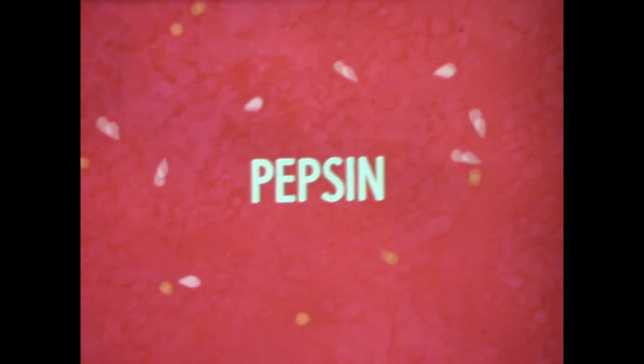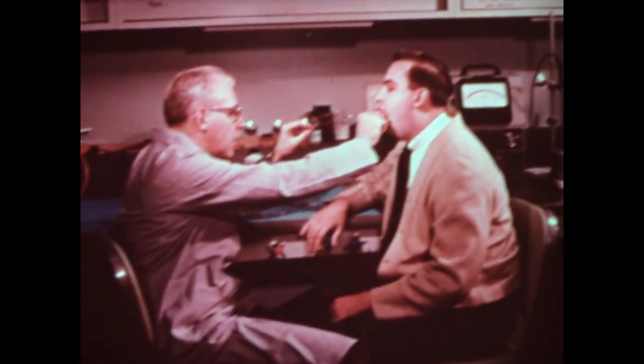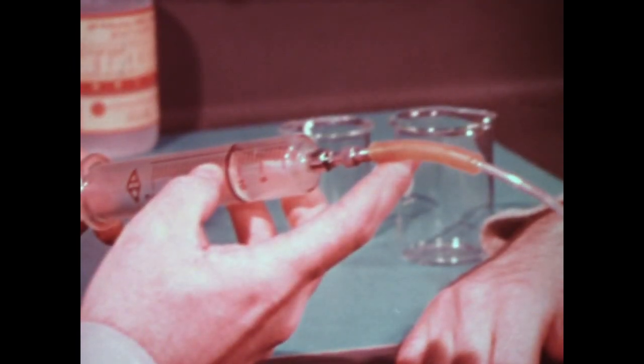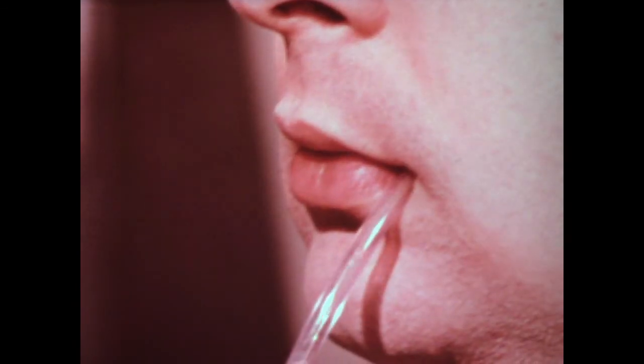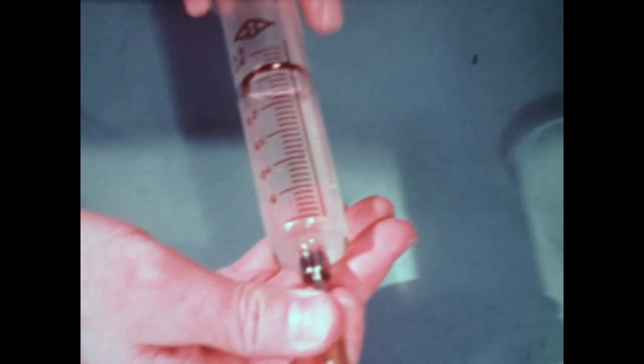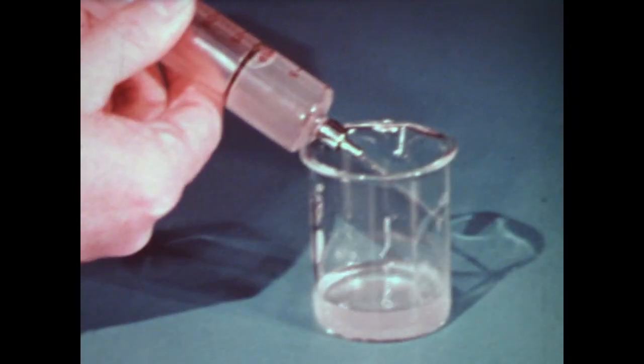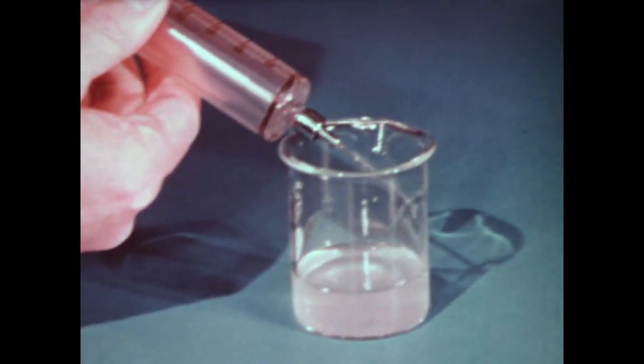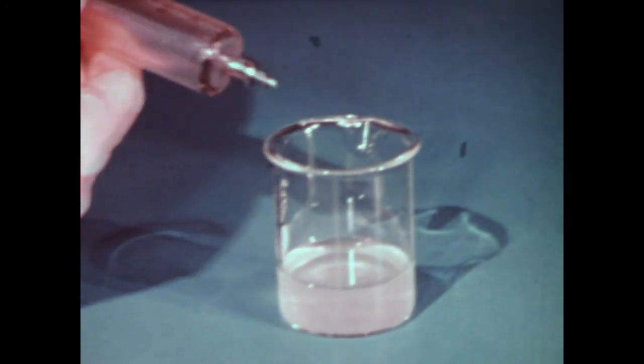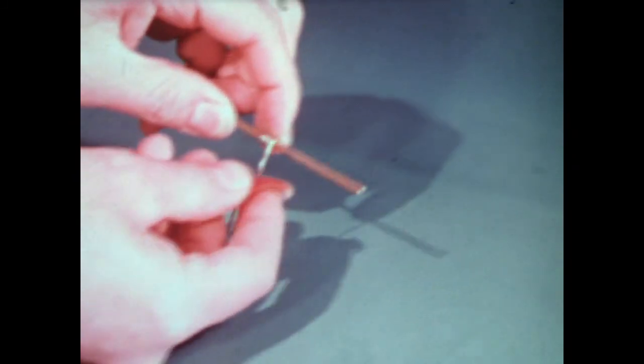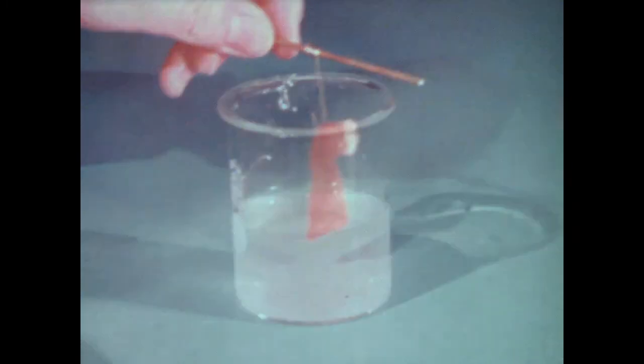This enzyme breaks down protein molecules. To demonstrate the digestion of protein in the laboratory, we'll remove a small quantity of gastric juice directly from the stomach in this manner. What effect will this gastric juice have on protein? To find out, we'll use protein in the form of this thin strip of beef. The meat is placed in the gastric juice and observed over a period of one hour.